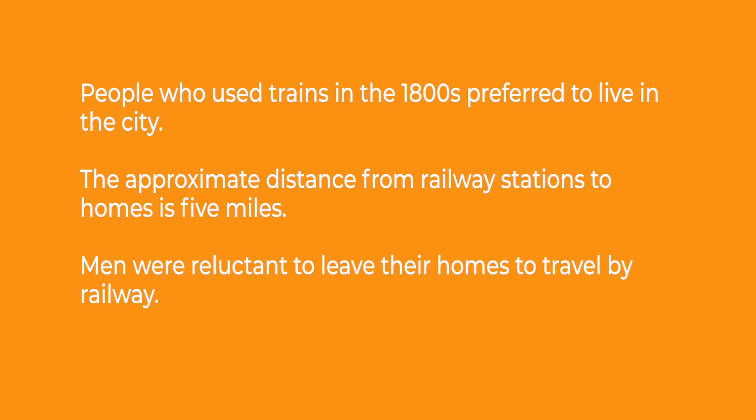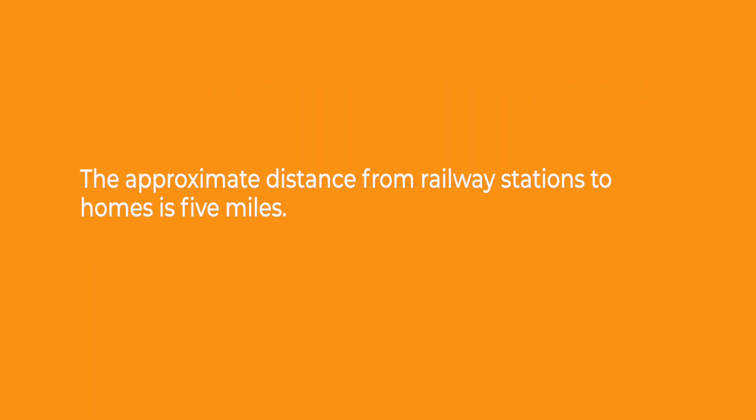Now, having listened to this extract about railways, identify one true point from the text. People who used trains in the 1800s preferred to live in the city. The approximate distance from railway stations to homes is five miles. Or, men were reluctant to leave their homes to travel by railway. The one that is true is the second one — as it says in the text, 'it will take them a journey of some five miles to their homes.'